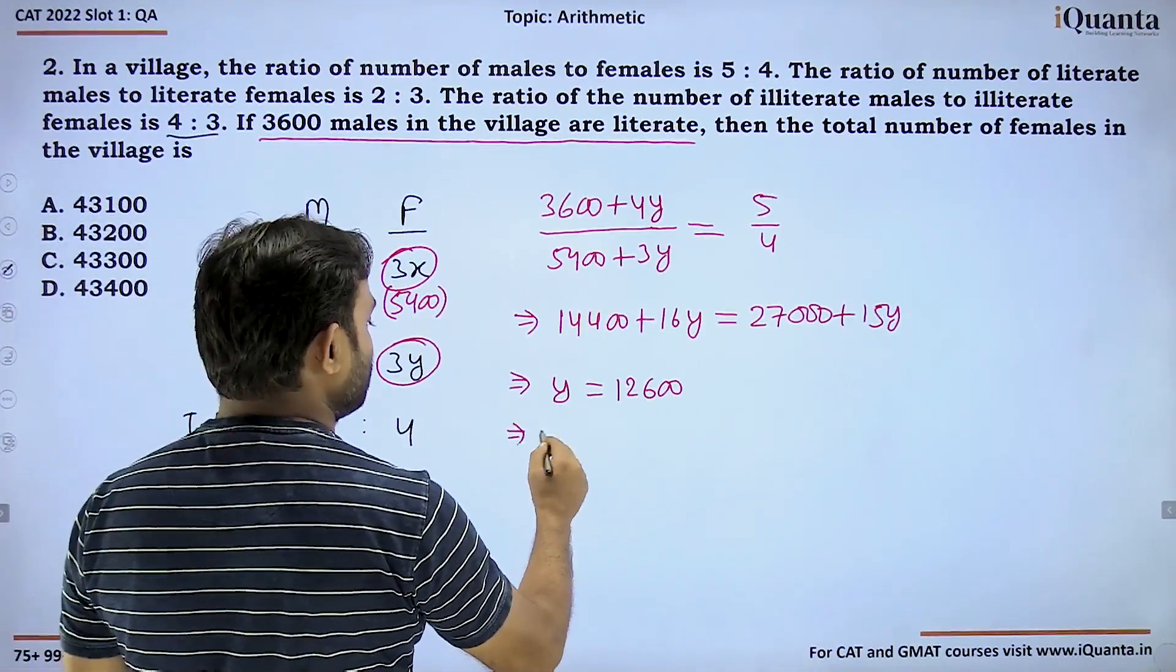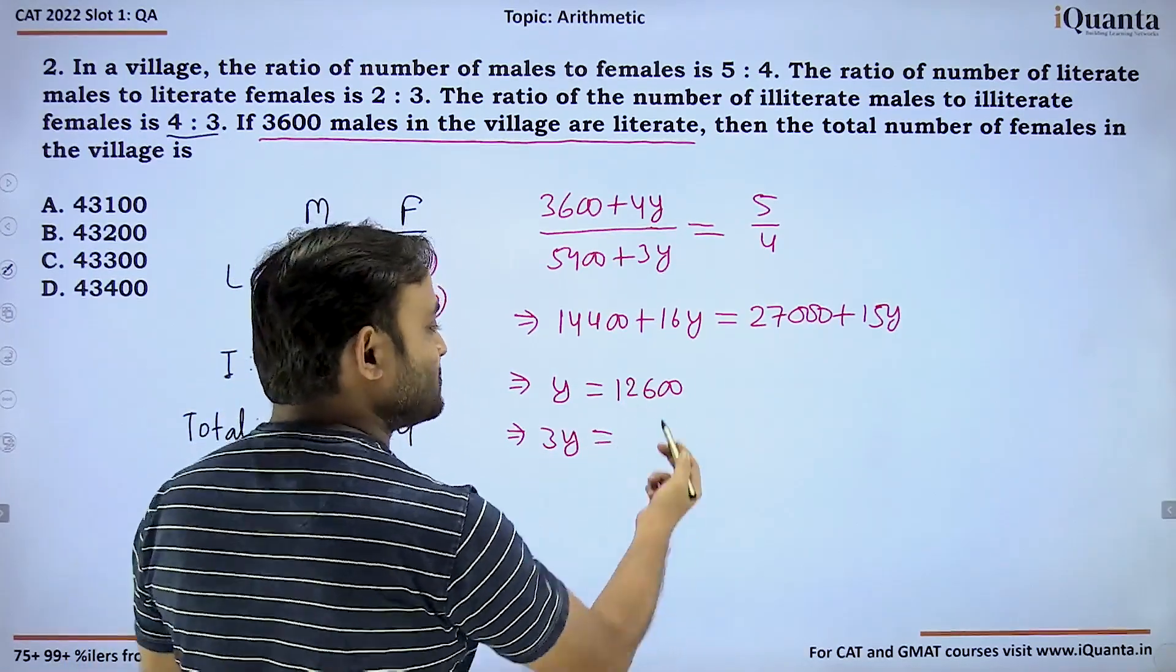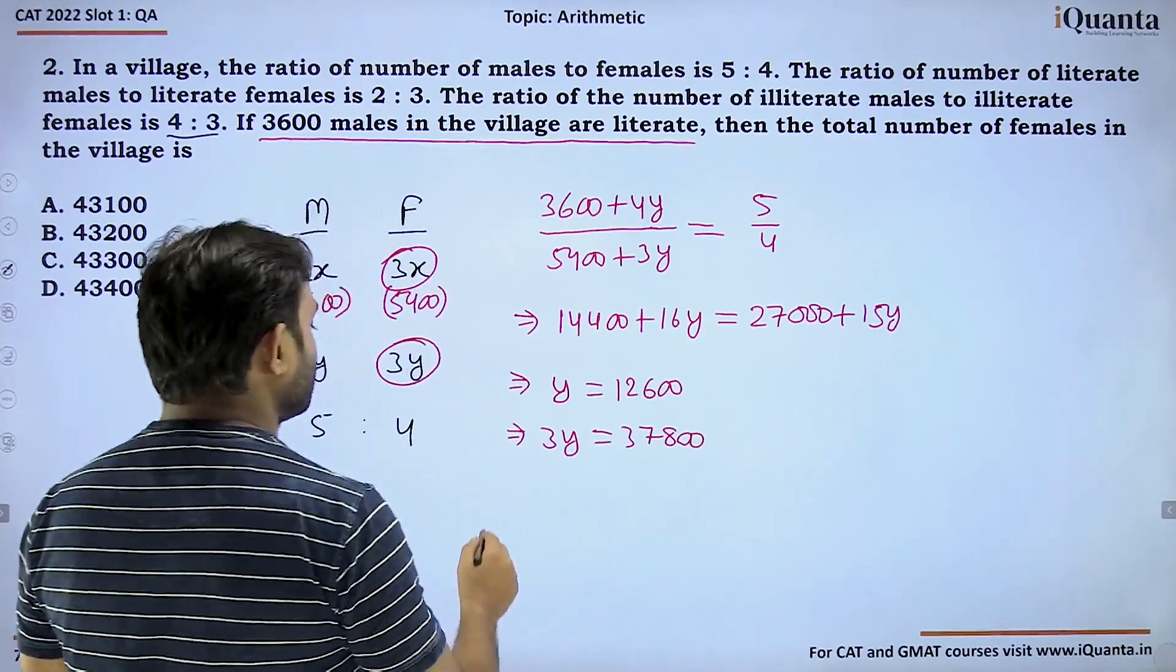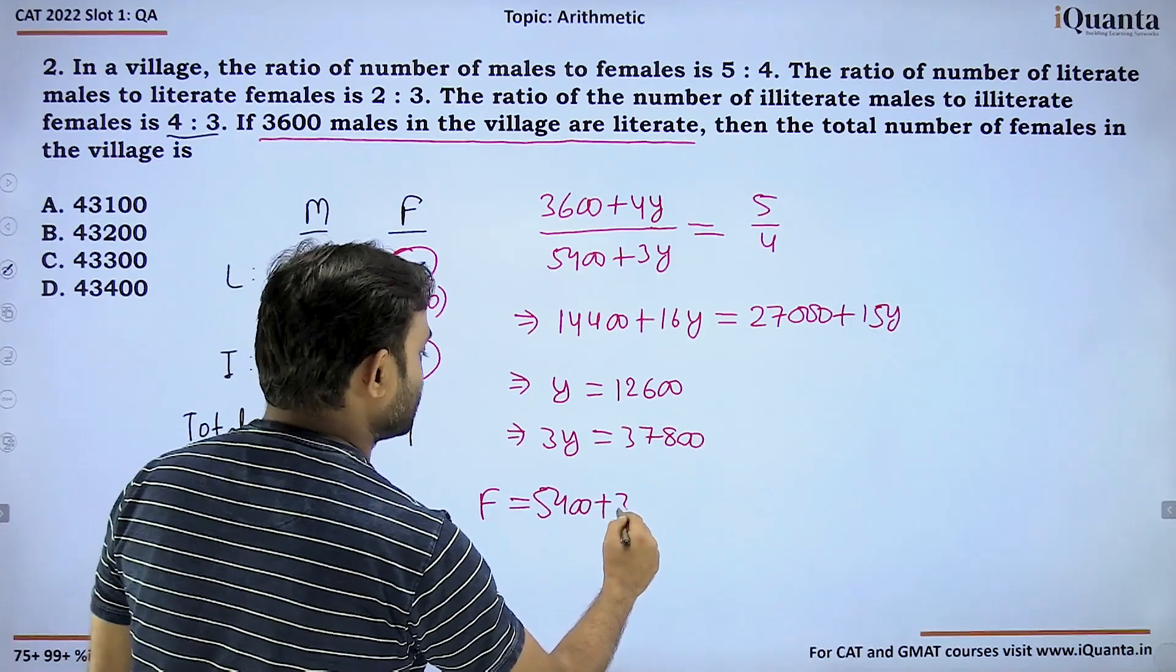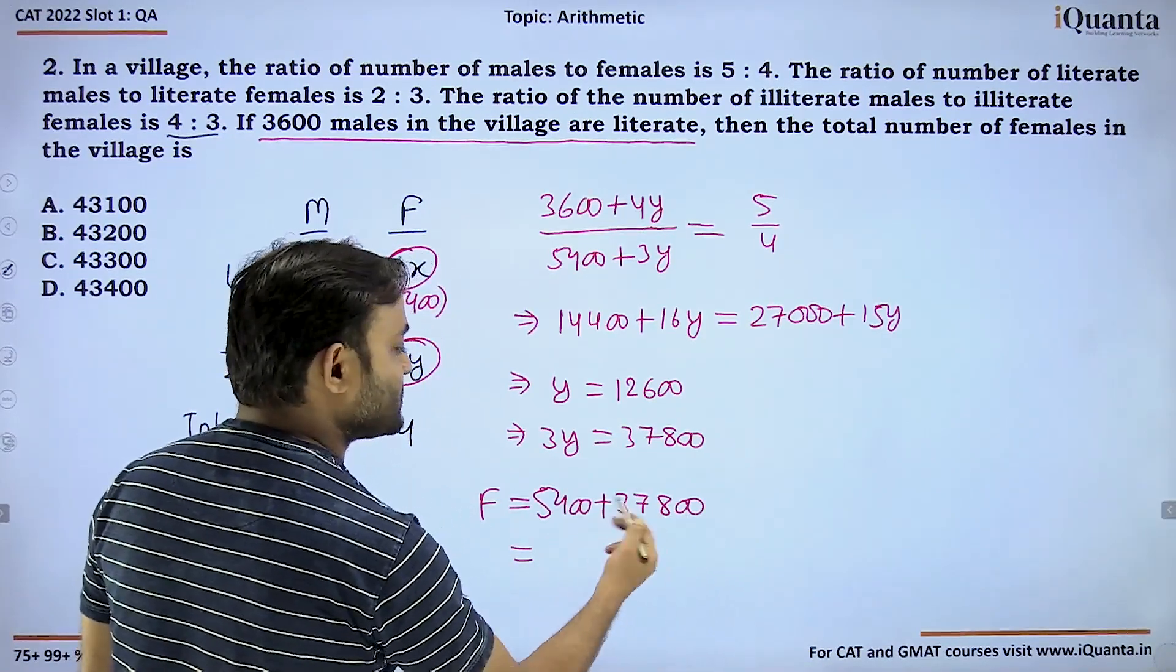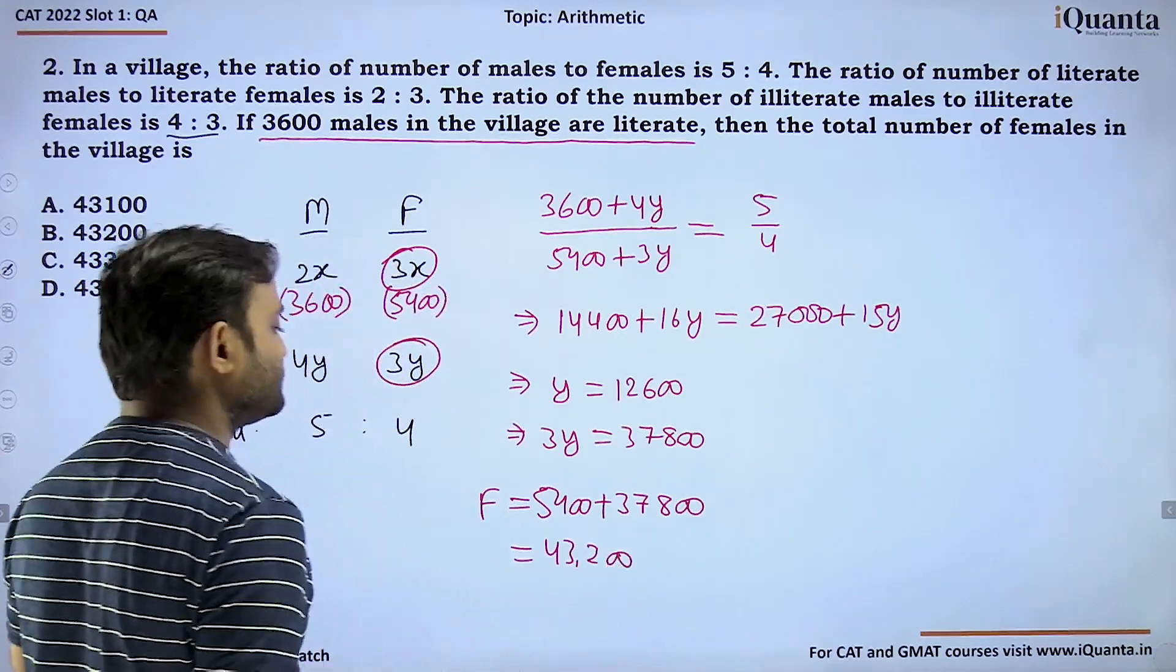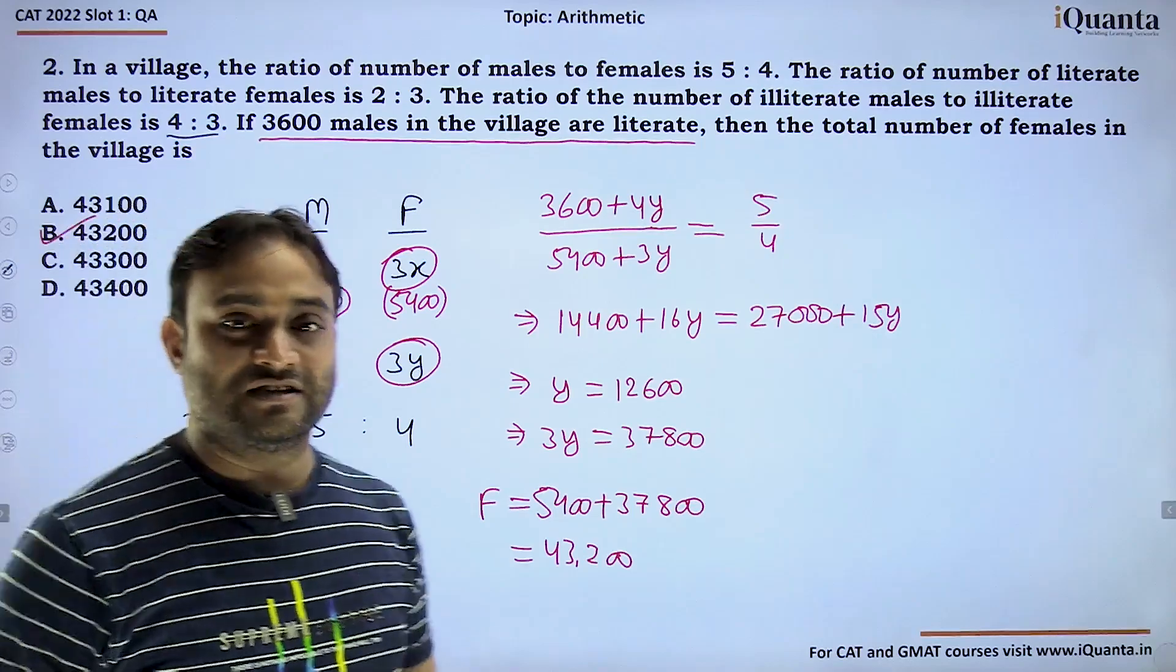We can write 3600 plus 4y upon 5400 plus 3y equals 5 by 4. Solving this, 4 into 3600 is 14400 plus 16y equals 27000 plus 15y. So y equals 12600. Total females is 3x plus 3y which is 5400 plus 37800, giving us 43200. Option B is the correct answer.